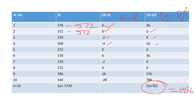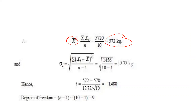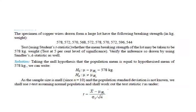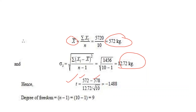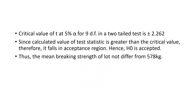Using the standard deviation formula, s = √[Σ(xi − x̄)² / (n − 1)] = √(1456 / 9) = 12.72. Plugging all values into the t-statistic formula: t = (572 − 578) / (12.72 / √10) = −1.488. The degree of freedom is n − 1 = 10 − 1 = 9.